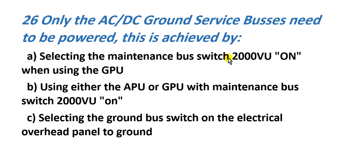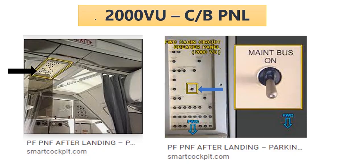The answer options: selecting the maintenance bus switch 2000PU on when using the GPU (ground power unit) or external power; or using either the APU or GPU with the maintenance bus switch; or selecting the ground bus switch on the electrical overhead panel to the ground position.